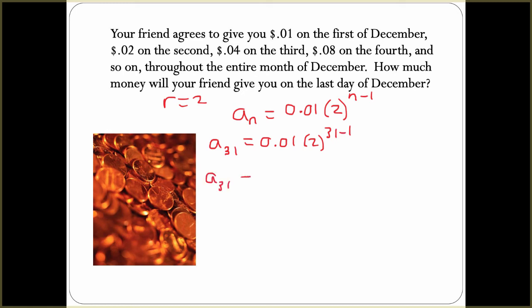I'm going to make this a little better by actually taking my exponent. 31 minus 1 is 30. So a_31, our 31st number in the sequence, is 0.01 times 2 raised to the 30th power.